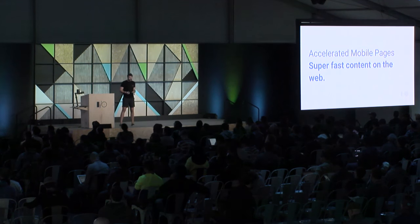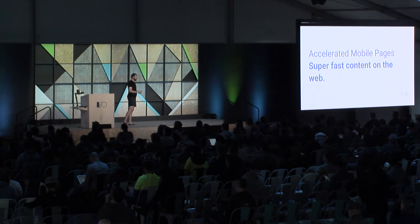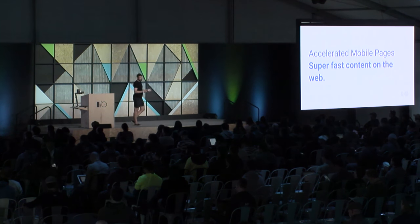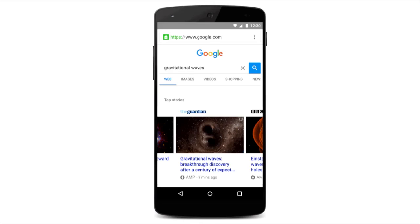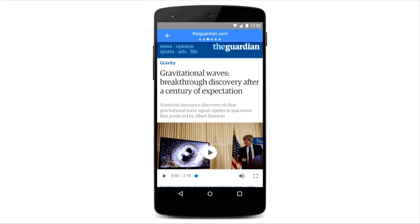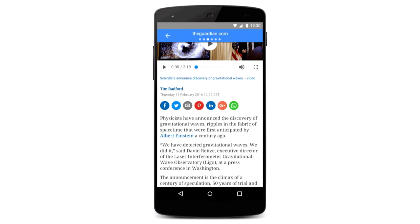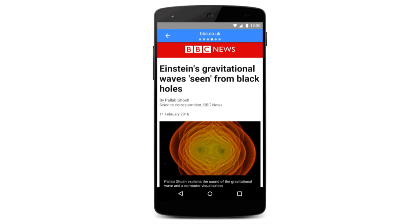AMP stands for Accelerated Mobile Pages, which is kind of stupid and I'm never going to say again. It's really all about super fast content on the web. AMP is an open source project launched inside Google in our search engine. We have this carousel - it just, boom, goes up. Load times are way, way, way faster than we see on the normal web.